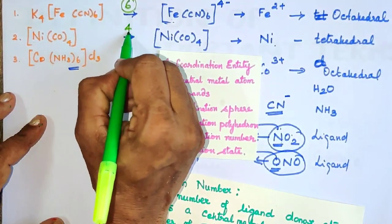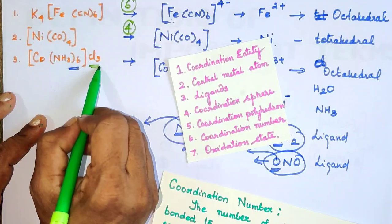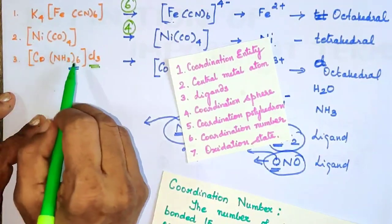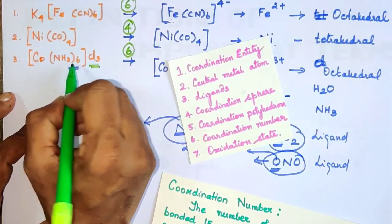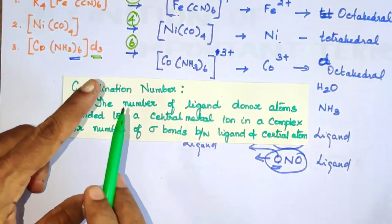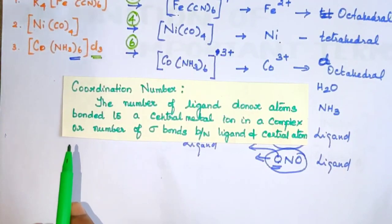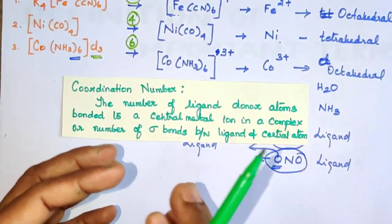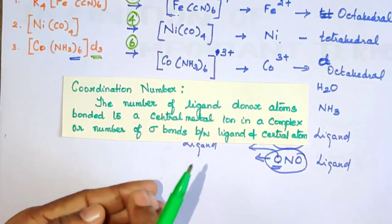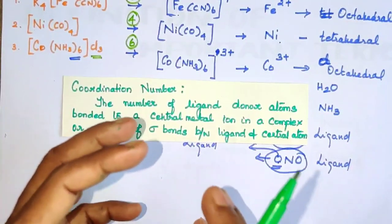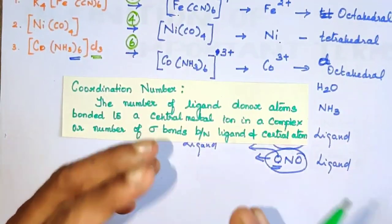Now the sixth term - Coordination Number. In [Co(NH3)6]Cl3, Cl3 is not a ligand; the 6 NH3 groups present inside the coordination sphere are the ligands. So the coordination number is 6 since there are 6 ligands present. The coordination number is calculated by counting the number of ligand donor atoms bonded to the central metal ion in the complex.